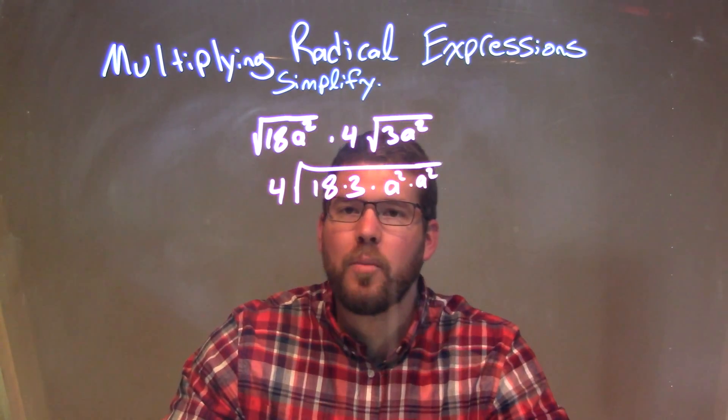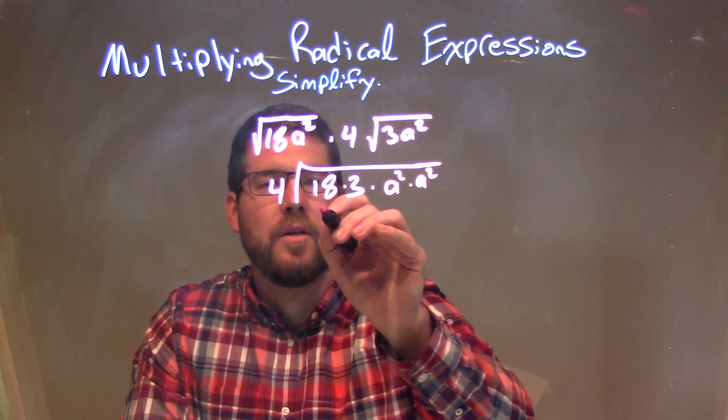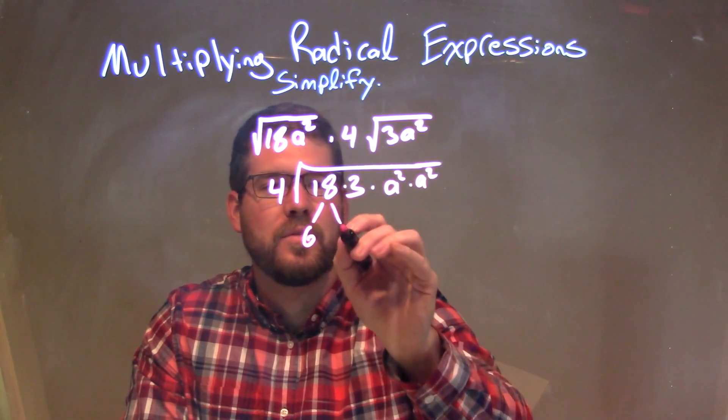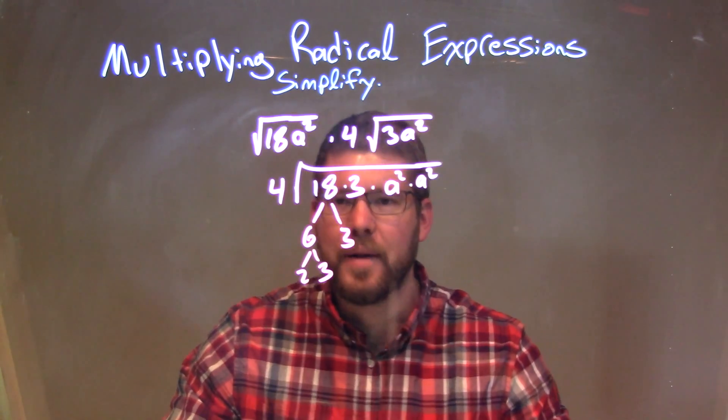Okay, well, let's break some things down. 18 is the same thing as 3 times 6, so it's 6 times 3, and 6 is 2 times 3.